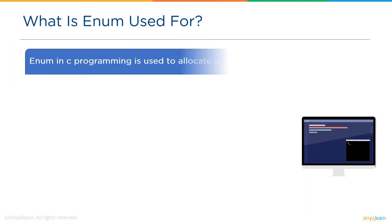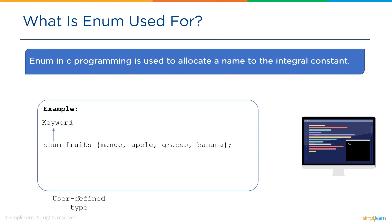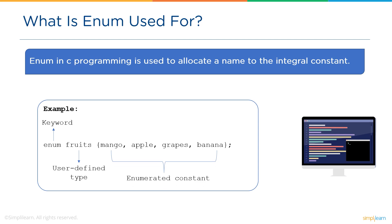Enum is used to allocate a name to the integral constant. In the example, we have enum as a keyword, fruit as a user-defined data type, followed by enumerated constants mango, apple, grapes, and banana inside the curly brackets. Since this list of enumeration constants comes under the category of fruits, we have fruits as a user-defined data type, which is possible with the help of the keyword enum.